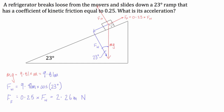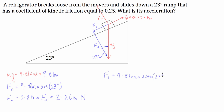What is going to cause this refrigerator to accelerate down the ramp is the component of the force due to gravity in the direction of the incline — we'll call this Fd. So Fd is going to be equal to 9.81m times the sine of 23 degrees, because this is the opposite side to the angle. That gives us 3.83m newtons.